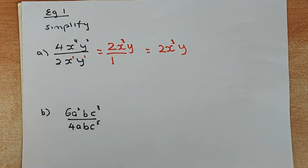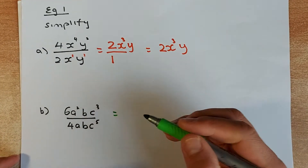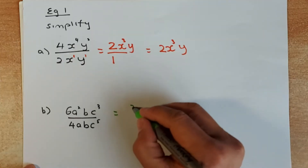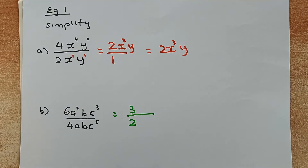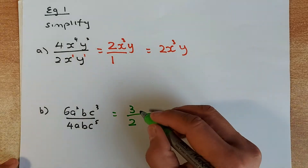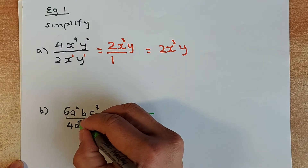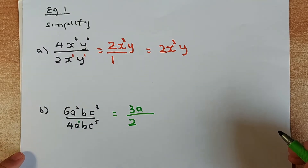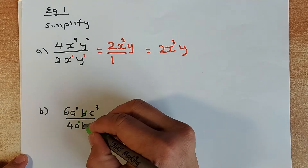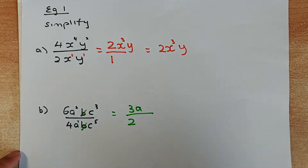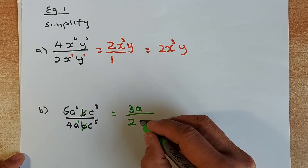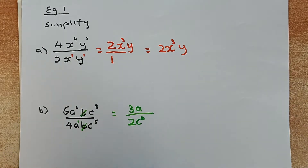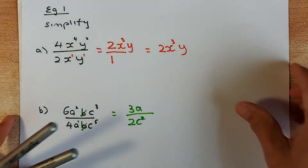The second one is slightly more difficult. Number divided by number: 6 divided by 4 is 3 over 2. Then a squared divided by a leaves 1a, because 2 minus 1 is 1. b divided by b cancels out, leaving nothing. And c cubed over c⁵ — there are more c's at the bottom by 2 — so c squared remains at the bottom. That is how you simplify a fraction.